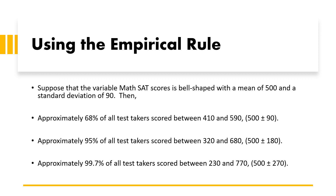Also, 99.7 percent of the data in a bell-shaped distribution lies within three standard deviations of the mean. For example, if math SAT scores are bell-shaped with a mean of 500 and standard deviation of 90: 68 percent of scores lie between 410 and 590 (500 ± 90); 95 percent lie between 320 and 680 (500 ± 180); and 99.7 percent lie between 230 and 770 (500 ± 270).